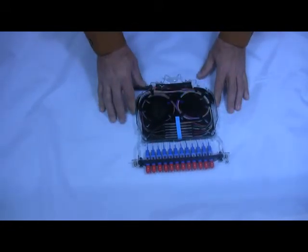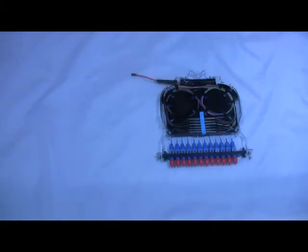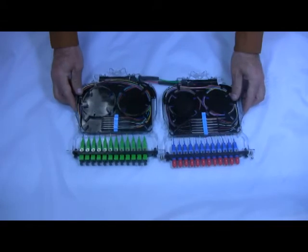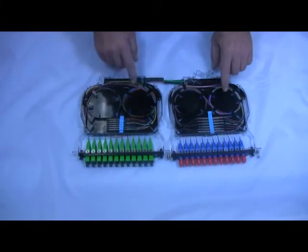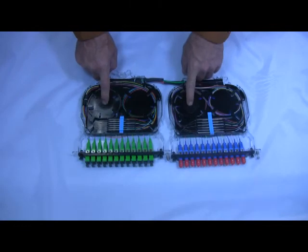After everything is secure in the tray, you can go ahead and add your splice tray cover. Now if you'll notice, in the end result, even though we're coming in from opposite sides, the 900 micron is always stored on this side, the 250 micron on this side. Perfect.